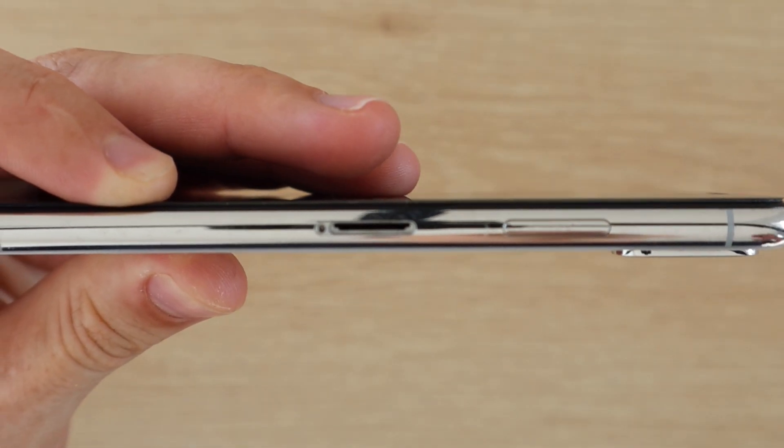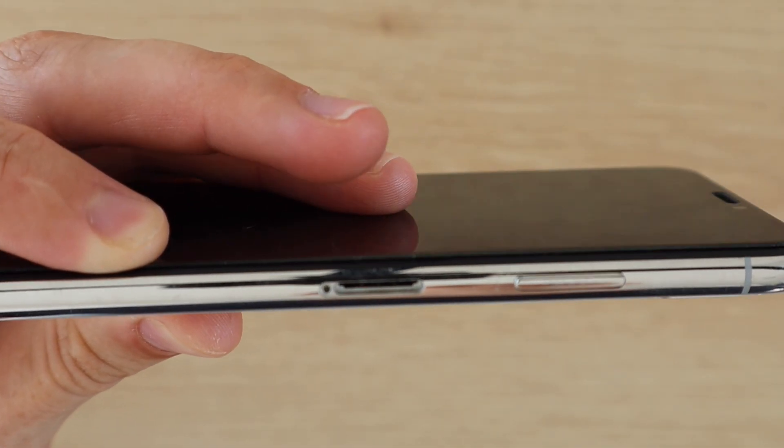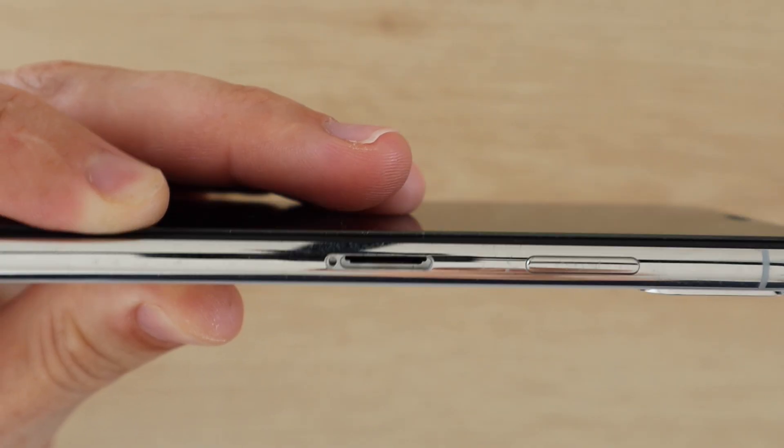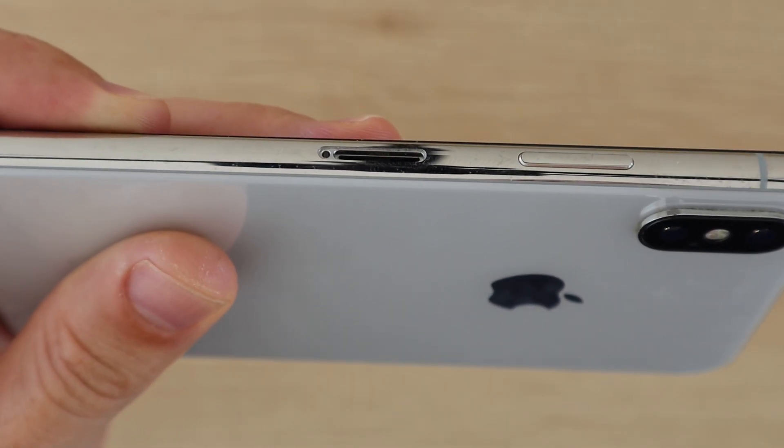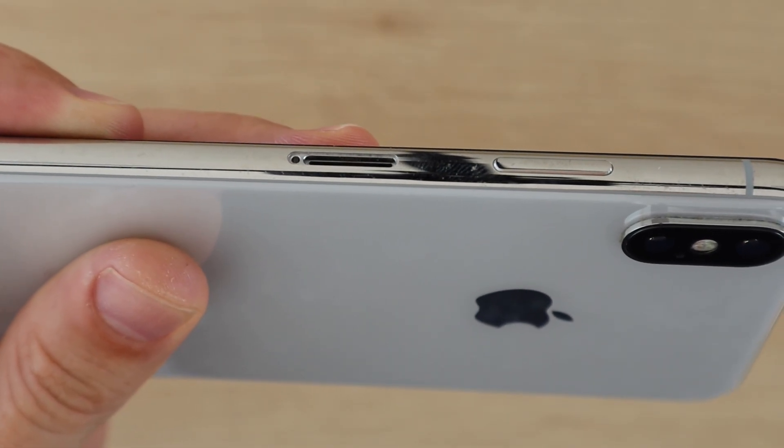If you look into the SIM card tray slot on the display side behind the metal plate, you'll either see a white or red stripe. You may need to shine a light into the tray in order to see it.